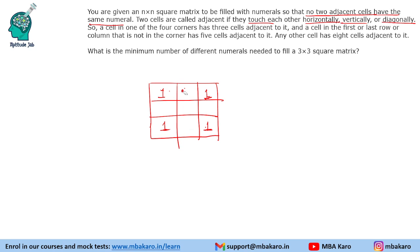Now we try to put the next number, 2. If we put 2 here, we cannot put 2 in the three adjacent cells, but 2 can be placed in the remaining cell. Then we put 3 here — it's a fresh digit so it has no constraint yet. We cannot put 3 in adjacent cells, so we put 3 elsewhere. Next we can place 4. So the minimum number of different numerals needed is 4.